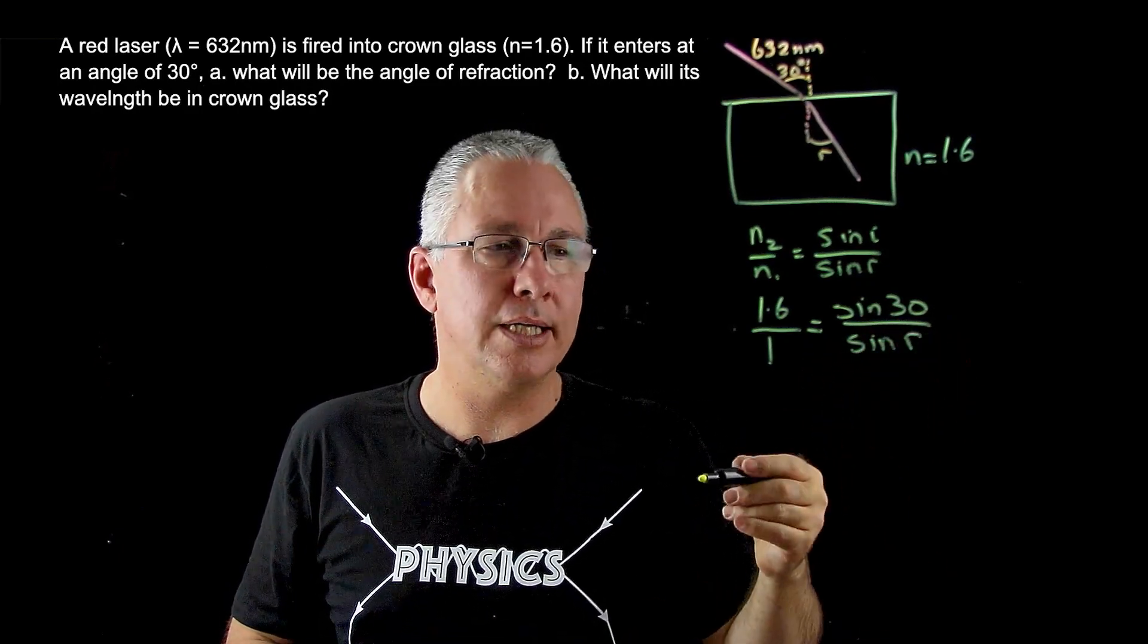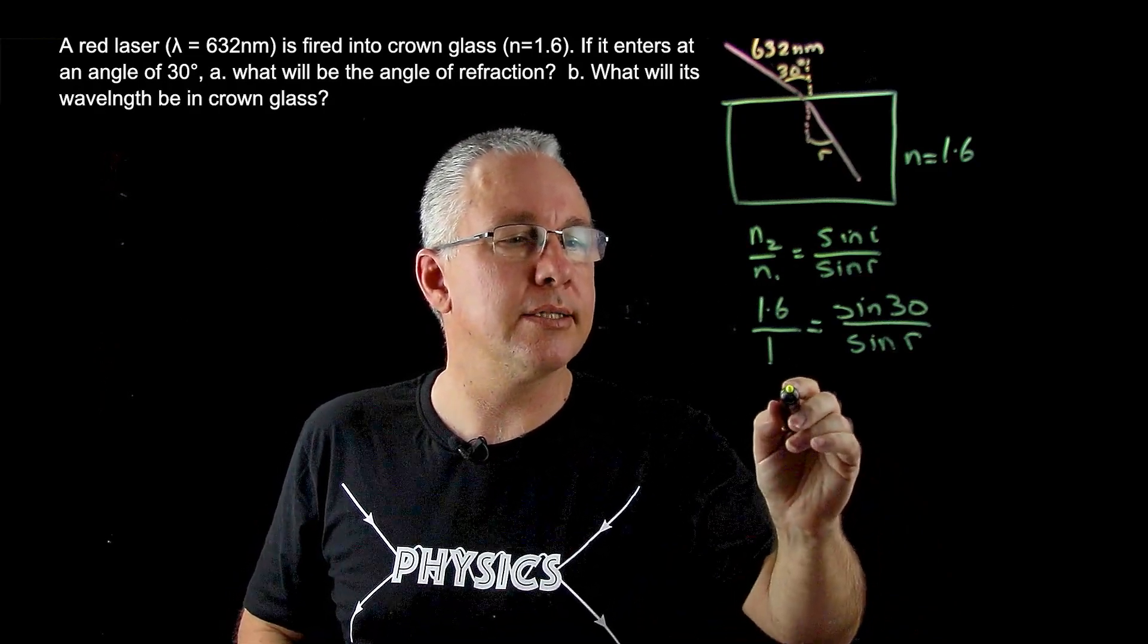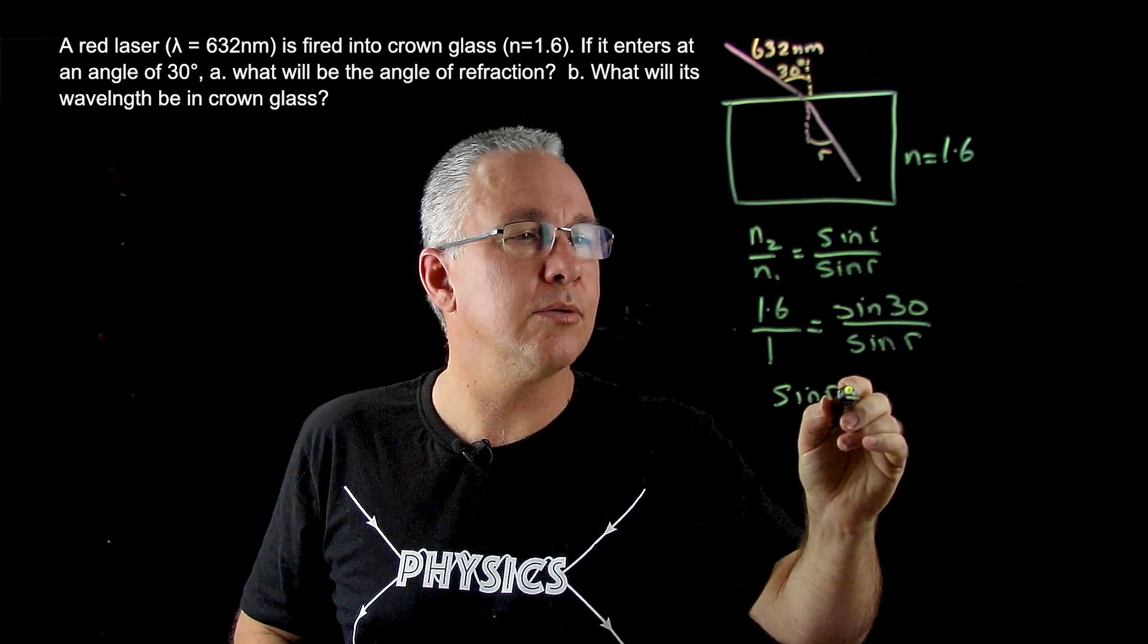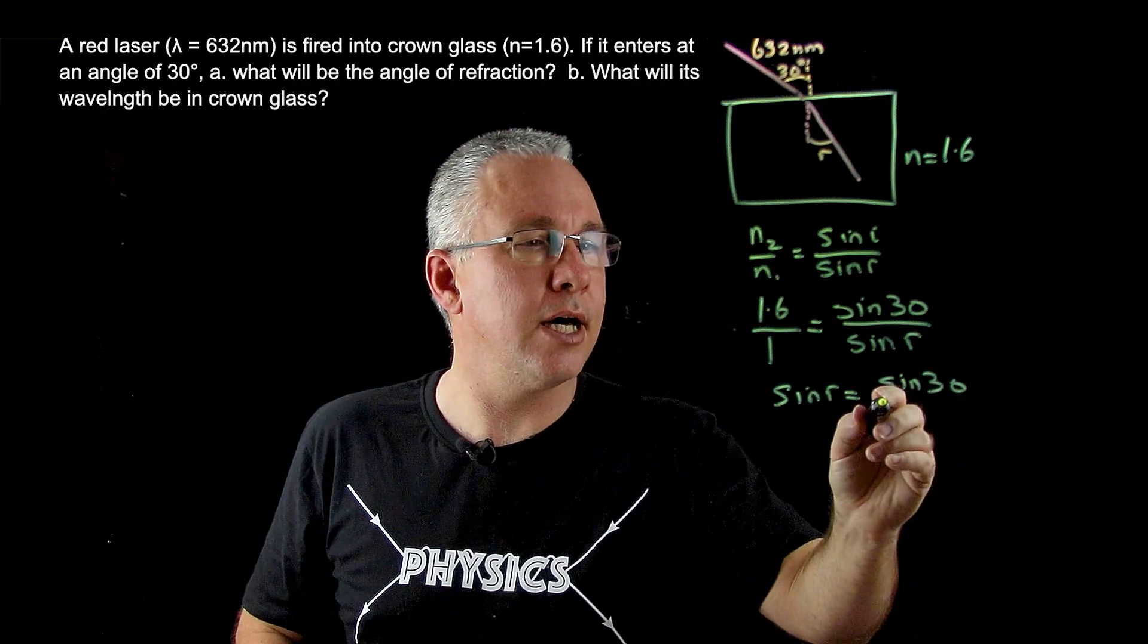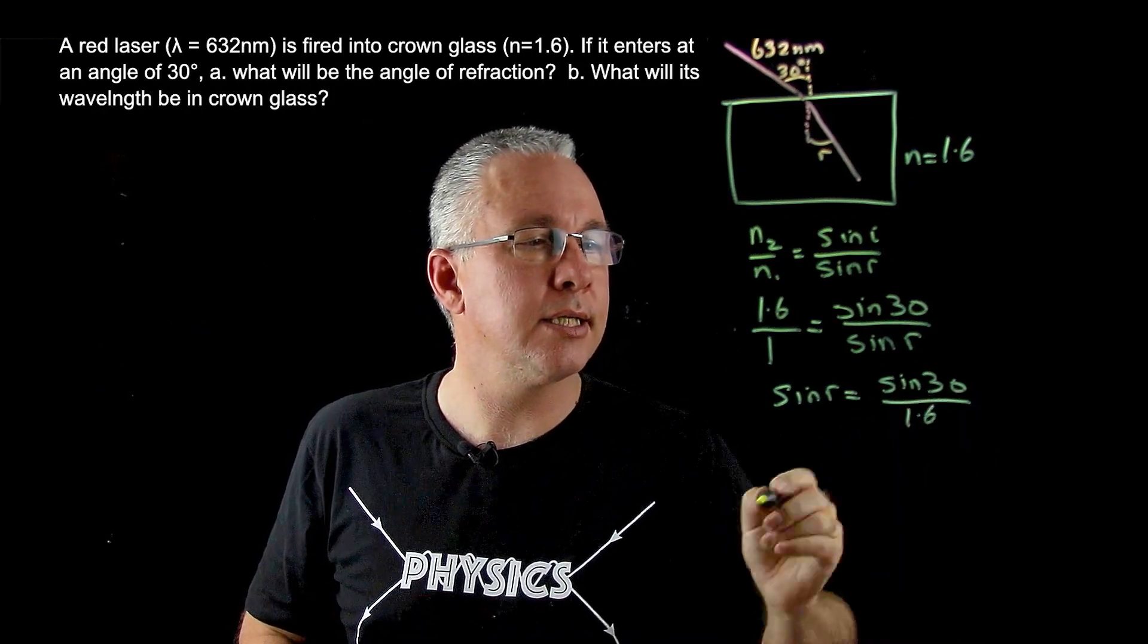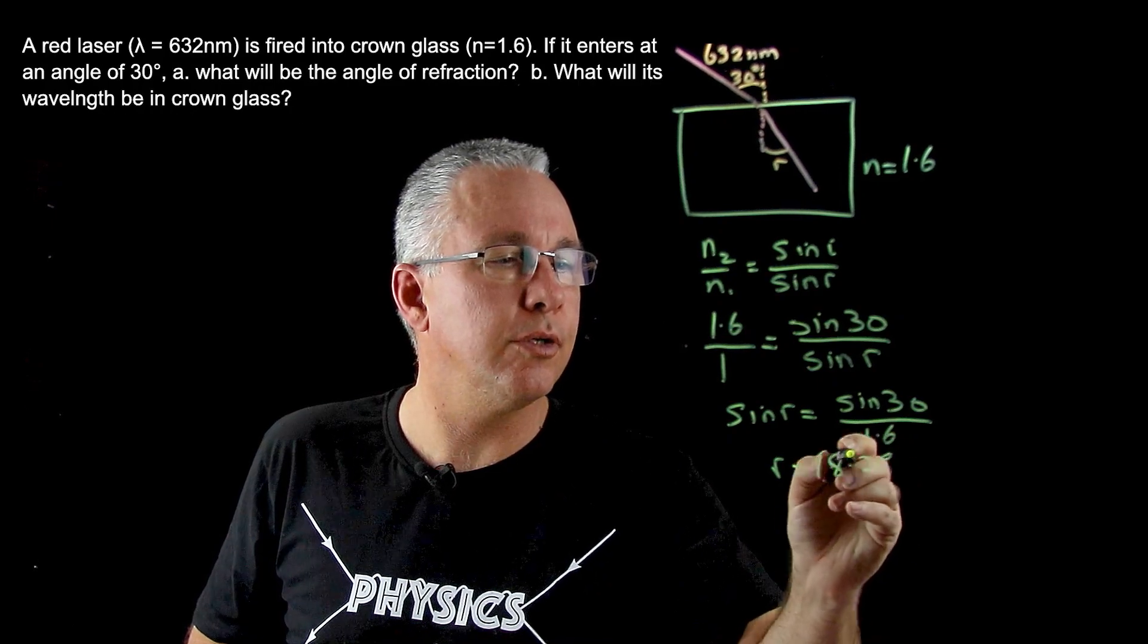So now all I need to do is rearrange that. And so I get sin R is equal to sin 30 divided by 1.6. I'm going to get an R value of 18.2 degrees.